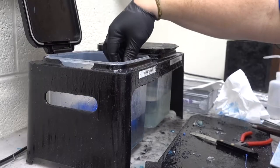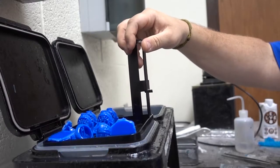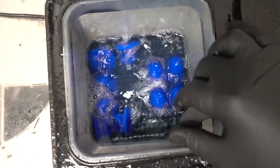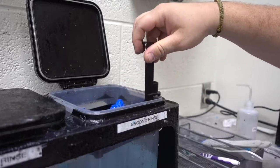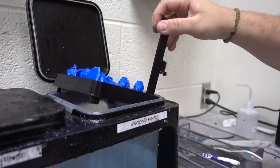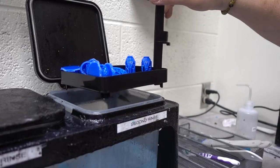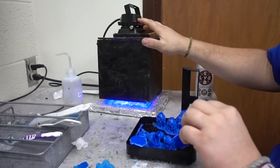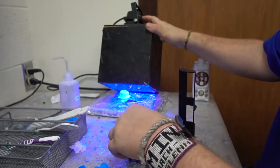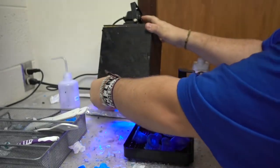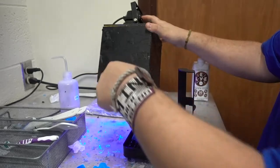We first soak it in a bath of isopropyl alcohol—the first bath cleans off the majority of excess resin so it doesn't cure in unwanted places, and the second bath gives it a final cleaning. Then we put these rings into this UV light for final curing, which penetrates deep inside and cures any excess uncured resin.